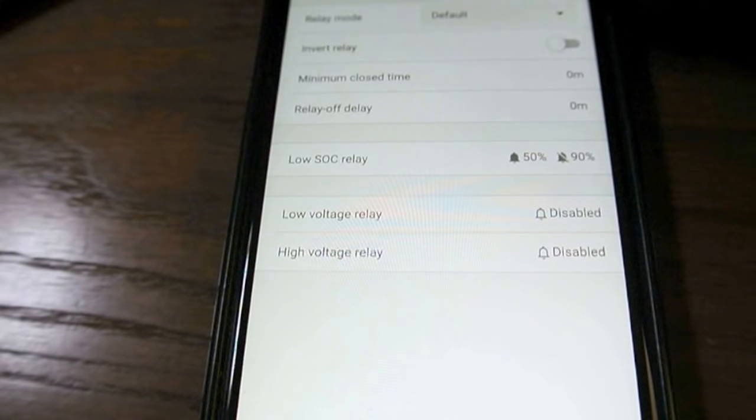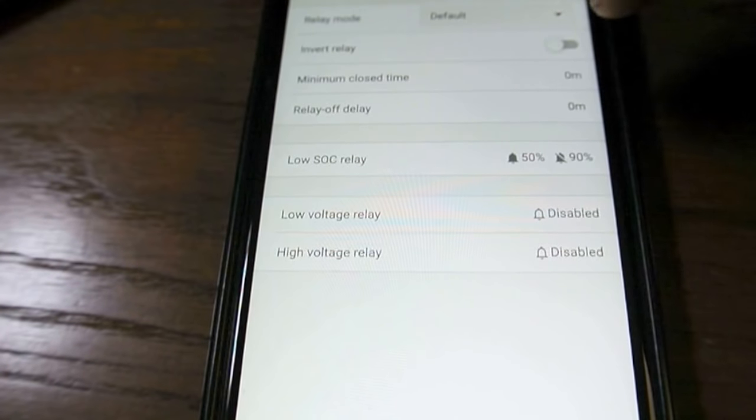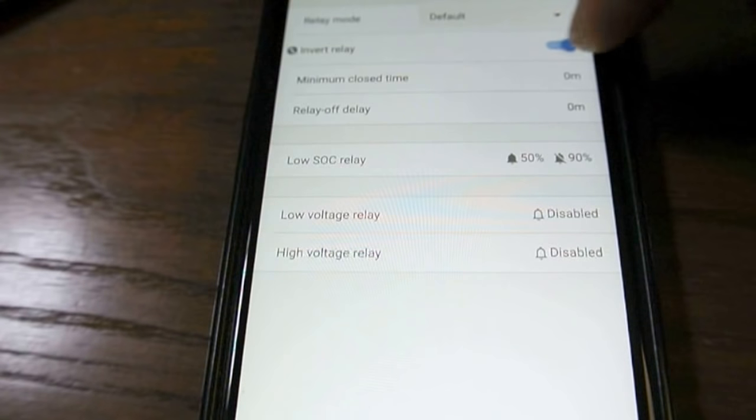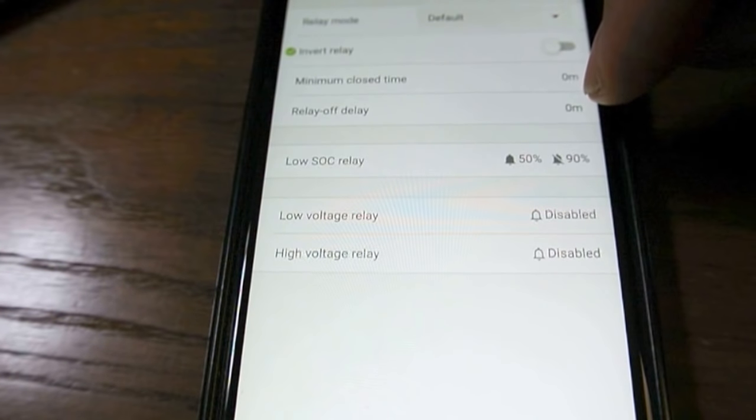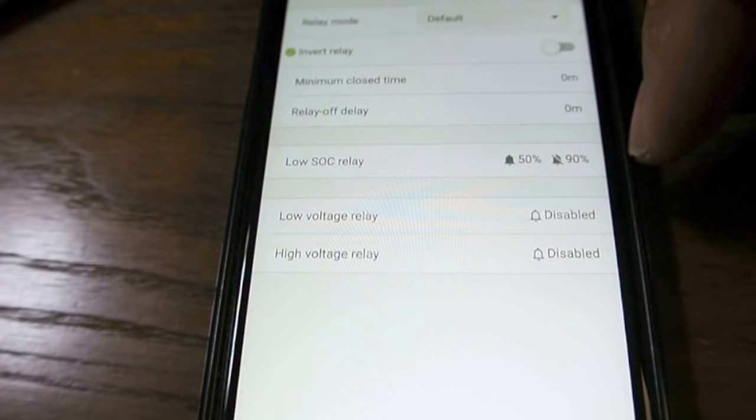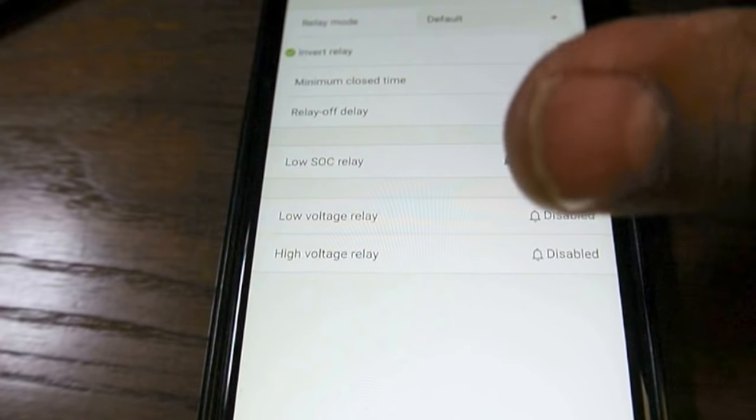Relay and it has alarm relay. You can invert the relay. So I'm going to guess that you can either have open contacts or close contacts. Minimum close time, relay off delay, low state of charge relay, low voltage relay, high voltage relay.